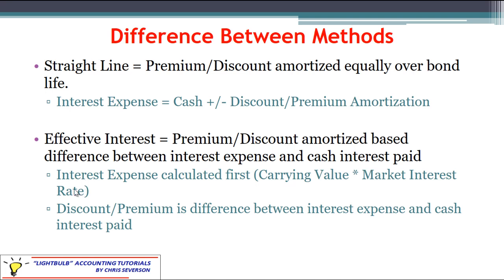We can still calculate the cash interest paid the same way — face value times stated rate — so that hasn't changed. But we calculate the interest expense by taking the carrying value of the bond. Notice this is not par value, and it's not the issue price — it's the carrying value, which will change every time. It will decrease if it's a premium or increase if it's a discount every year. So we take whatever that beginning-of-year carrying value is, multiplied by the market interest rate — it's very important that we use the market rate there.